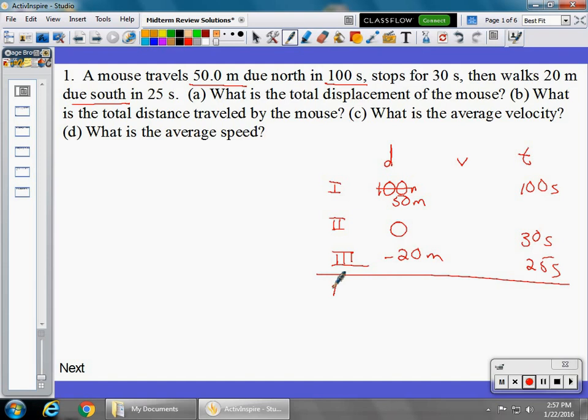And we're going to have a total down here at the bottom. So, the first part of the question, part A, says: what is the total displacement for the mouse? Again, displacement is a vector quantity. It has a direction to it. How far are you from where you began?